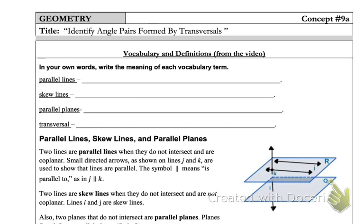First off, parallel lines. Parallel lines, I think most of you guys would describe it as two lines that are never going to intersect. I'm going to go ahead and add the fact that they are coplanar. And coplanar just means that they're lines that lie on the same plane. So you could think of them like on the same sheet of paper. And the symbol that we use for parallel lines is two vertical lines.